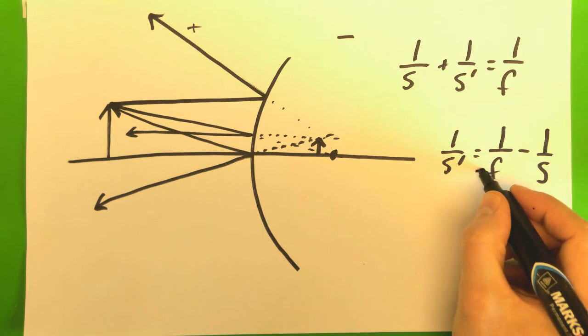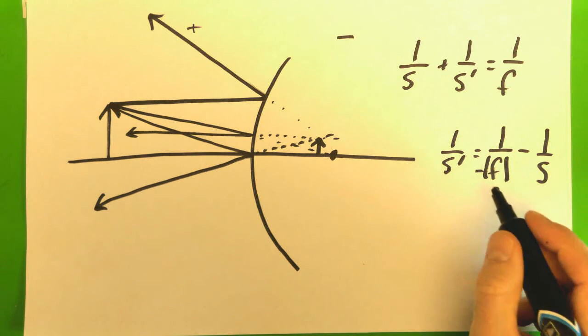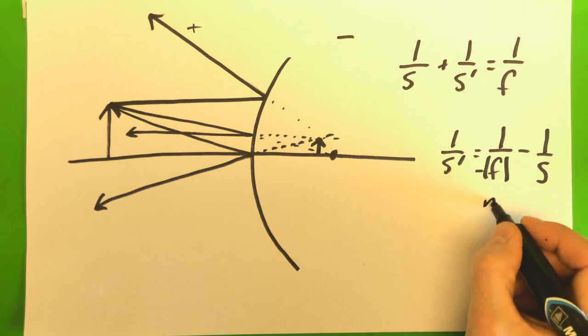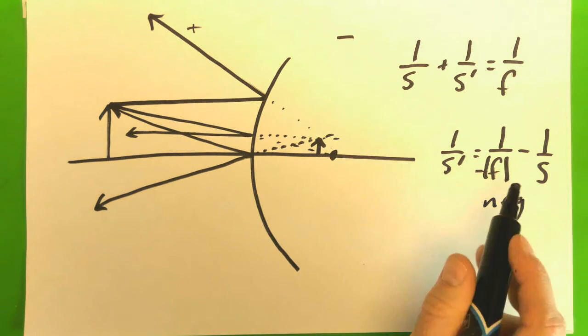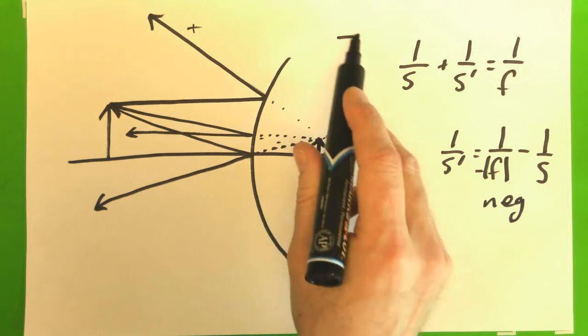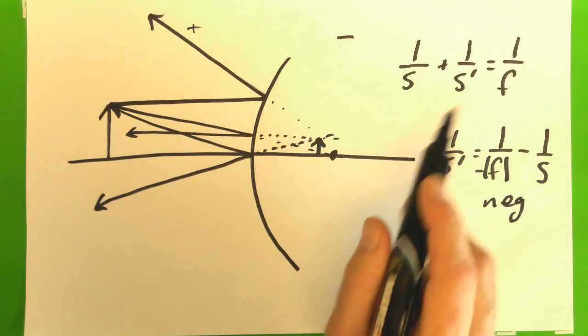And this is negative magnitude of f, because f is negative. Then this side is negative, it's going to be less than zero, so we get a negative. We'll get a negative value for s prime, meaning it's virtual, or it appears where the light isn't really going. So that is consistent with our math.